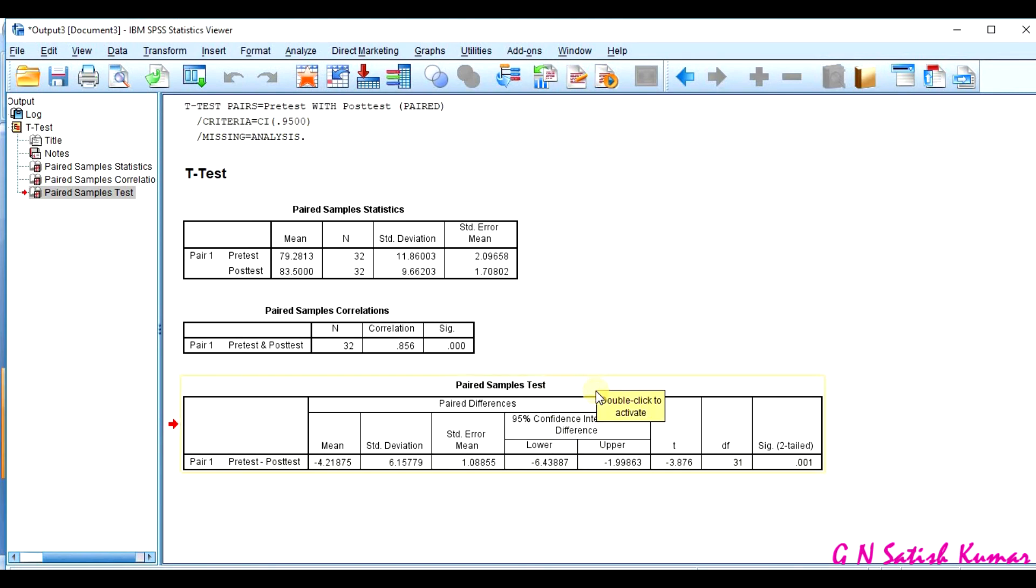In the output screen, the significant value is 0.001, which is less than 0.05. Then, I am rejecting my null hypothesis, which I interpret as, there is a significant difference between pre-test and post-test. Now, this is how we are going to formulate an example and how we are going to interpret, where there is a significant difference between pre-test and post-test. Thank you.